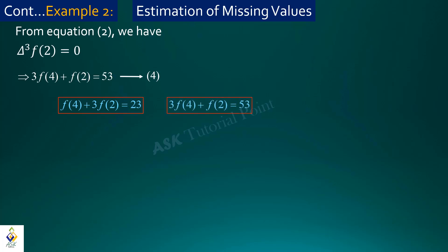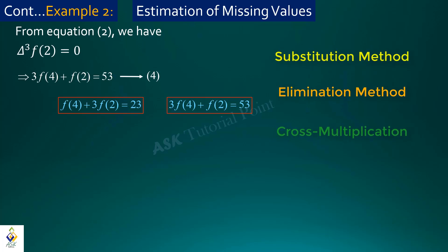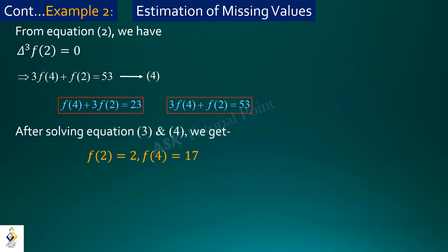So we have the system: f(4) + 3f(2) = 23 and 3f(4) + f(2) = 53. Solving this system of two linear equations in two variables using substitution or elimination, we get f(2) = 2 and f(4) = 17. If you have questions about this method, please comment.